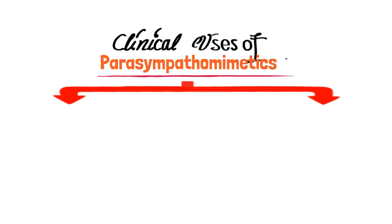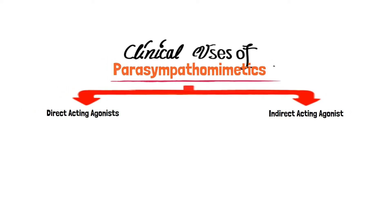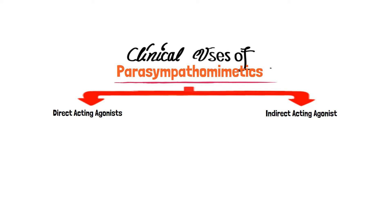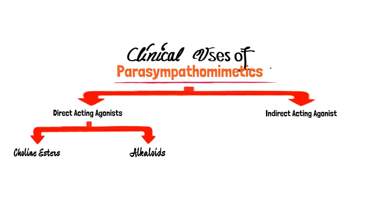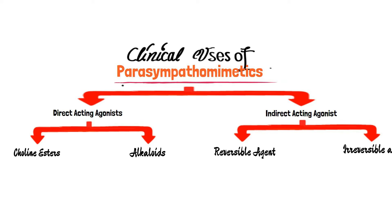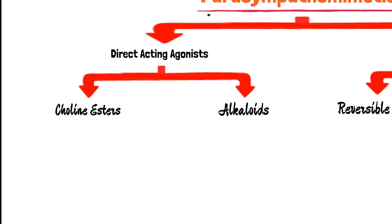Parasympathomimetics are classified as direct acting and indirect acting agonists. Direct acting agonists are further divided into choline esters and alkaloids. While indirect acting agonists, or anti-choline esterases, are classified as reversible and irreversible agents.